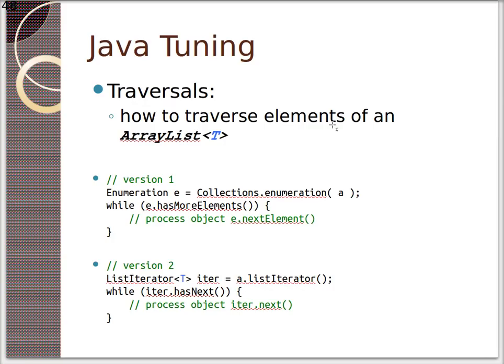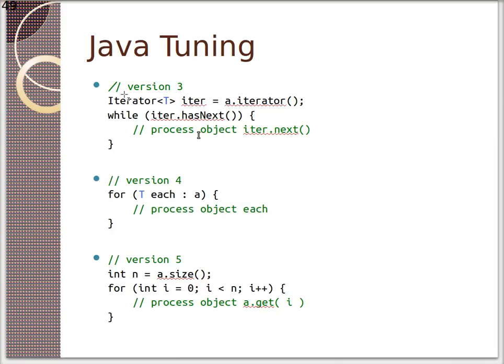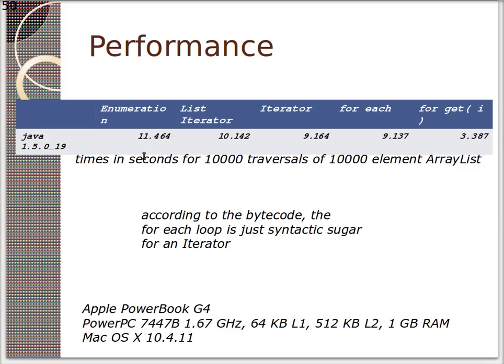So here's an example. We have two versions of code here. We're going to traverse an array. So we've got an array list t, and we're going to get an enumeration of it. We're going to say e has more elements, and then we process object. In this one, we do the same thing, except we get an iterator, and we call has next instead of has more objects. In version three, we get an iterator t, which will return an object of type t, and then we use has next. Then version four, we use a for each with t, and then version five, we get the size, and we use a for loop, and we call a.get. So try to guess which one's actually going to be faster. So if we look here, we can see enumeration slow, list iterator slow, iterator slow, it's just as slow as foreach, but for get is even faster.